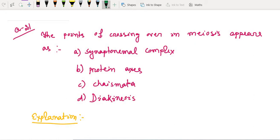Hello, here is question number 21. Question number 21 is the points of crossing over in meiosis appears as, that means the crossing over points are called what?